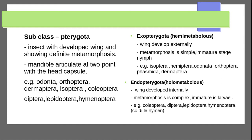Pterygota is divided based on metamorphosis type. Exopterygota, also called Hemimetabola, are insects where wings develop externally and metamorphosis is simple. The immature stage is called a nymph. There is no pupal stage — the life cycle goes from egg to nymph to adult.